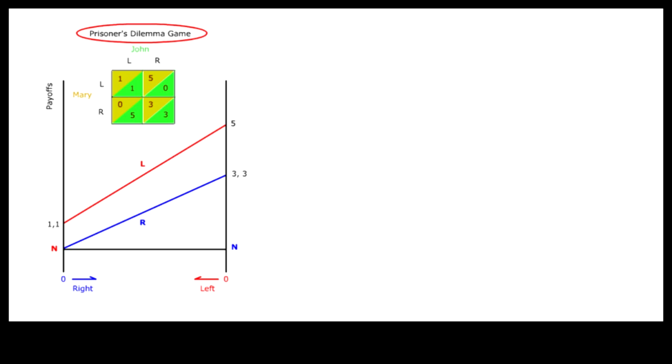Plotted this way, it is very clear that choosing L is the dominant strategy. It is also very easy to plot the collective payoff curve over the distribution of N people over choice L and choice R.